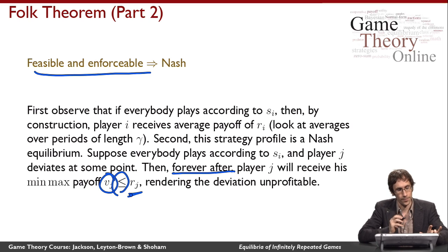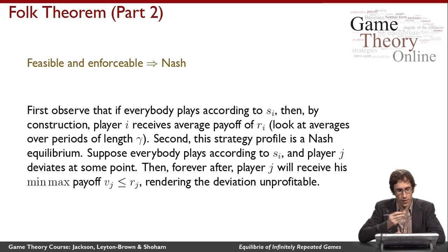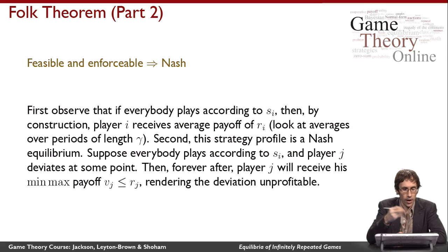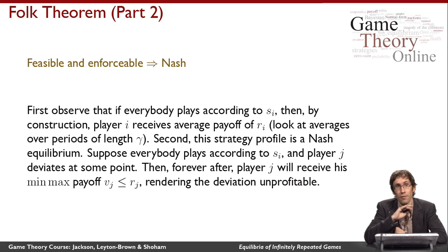So what we've seen is that essentially feasibility and enforceability correspond to the payoff profiles that are achievable in Nash equilibrium of an infinitely repeated game with average rewards.